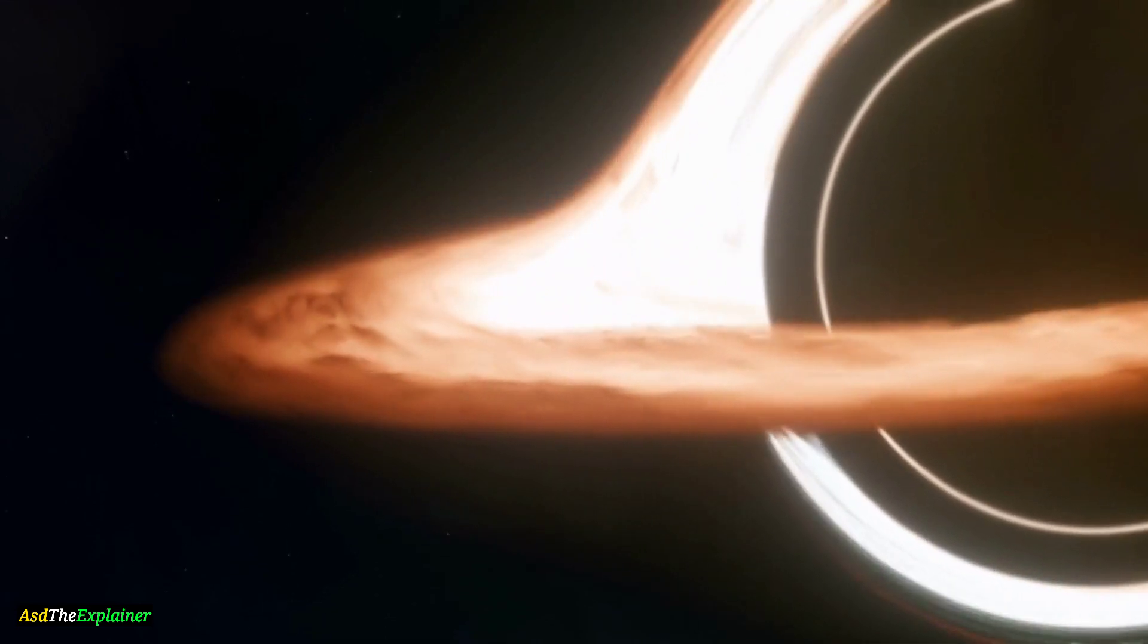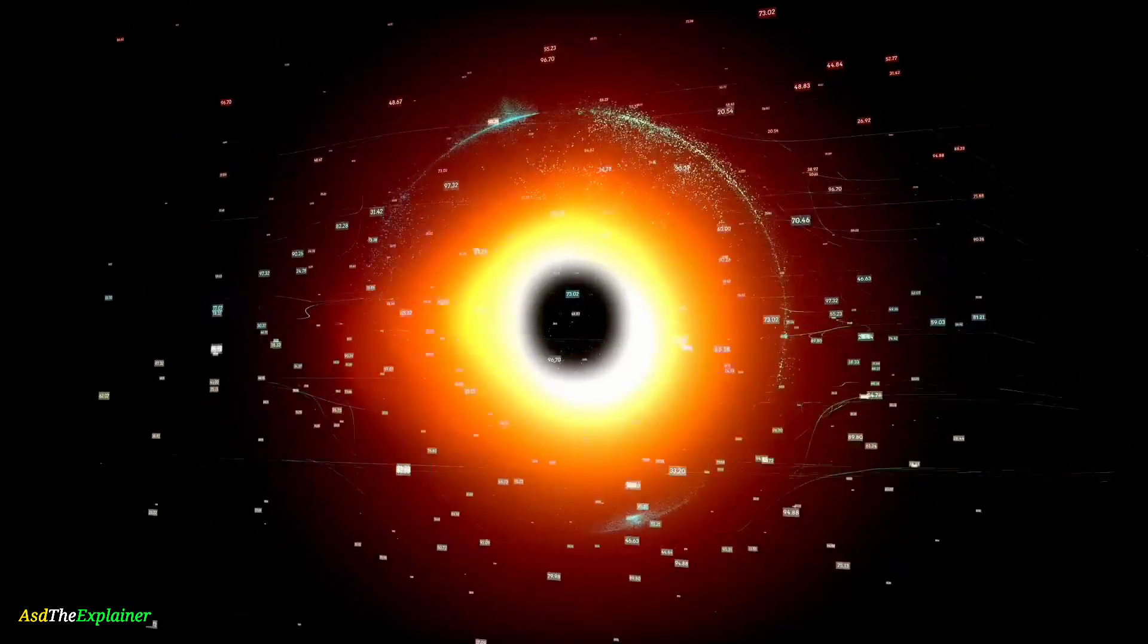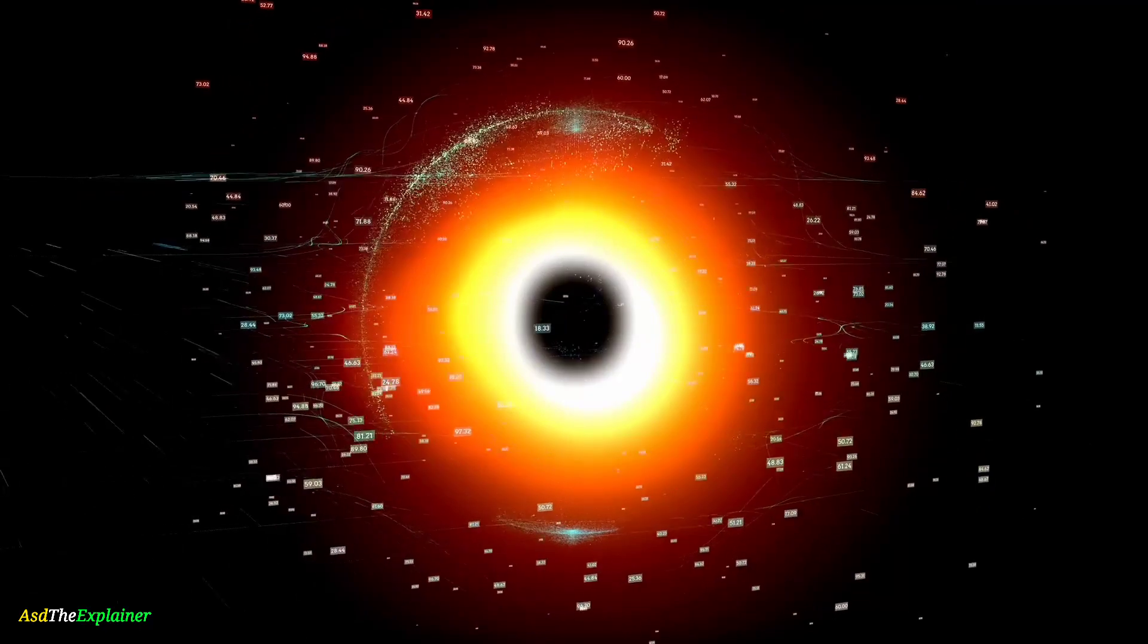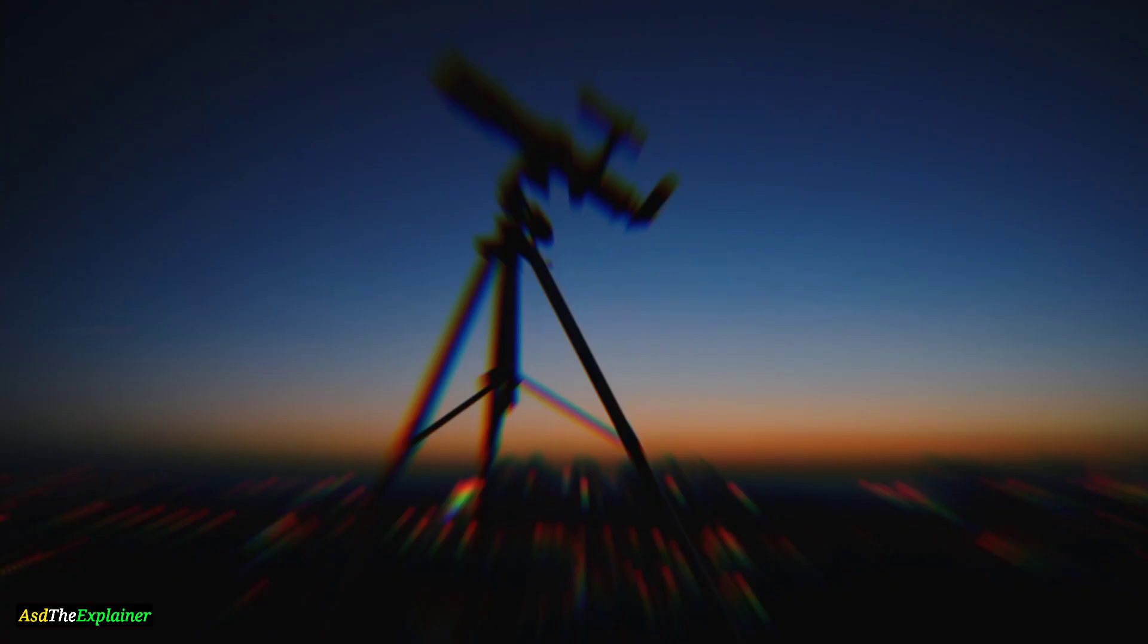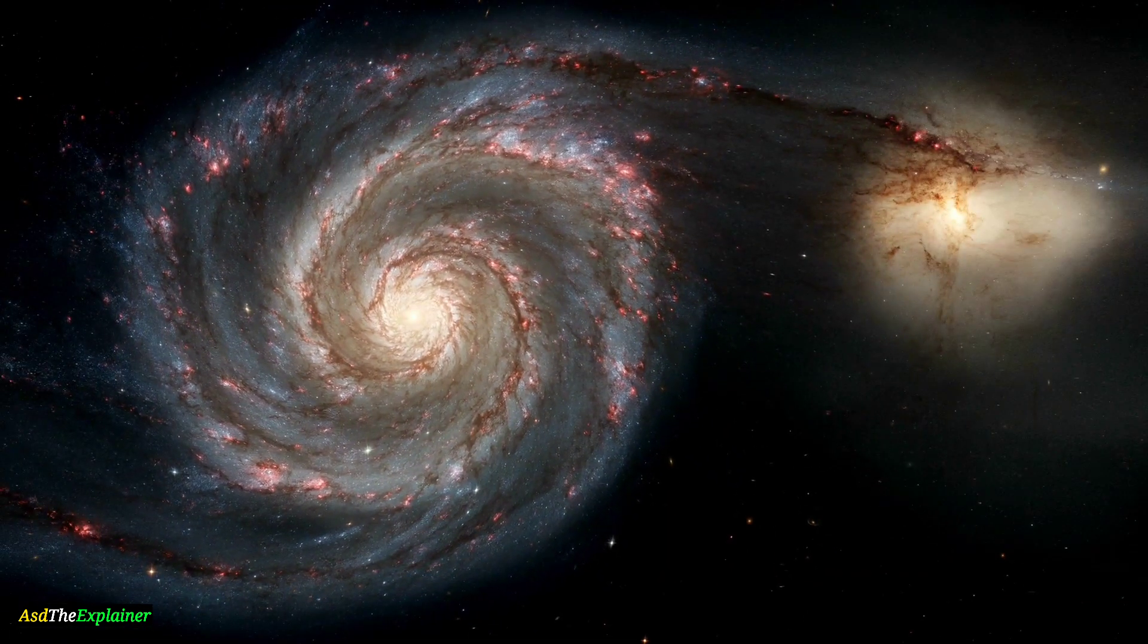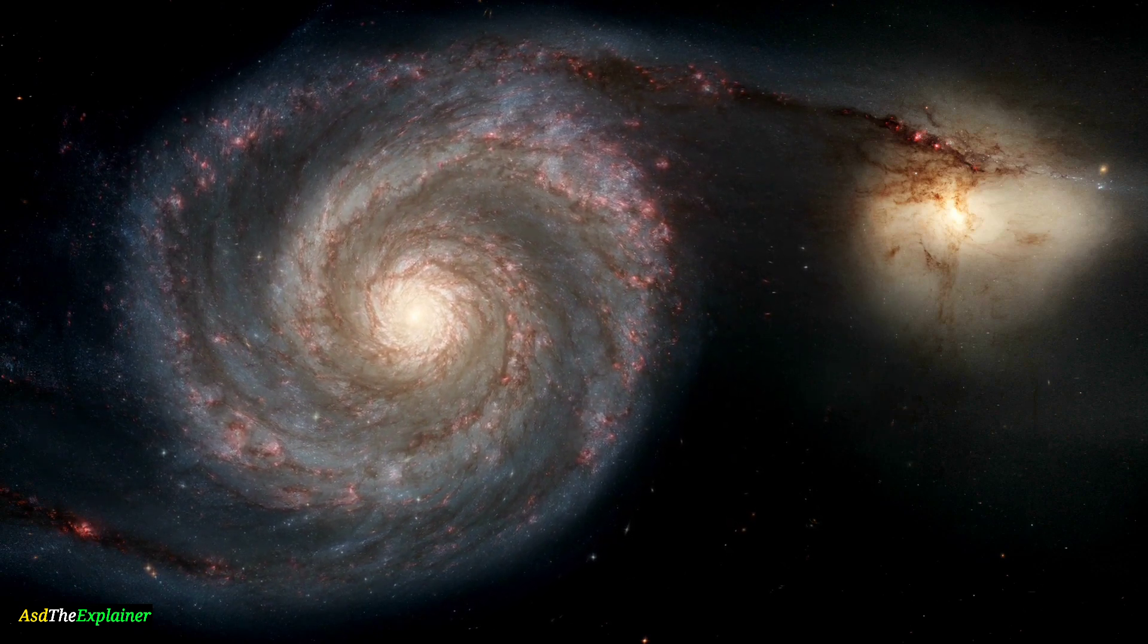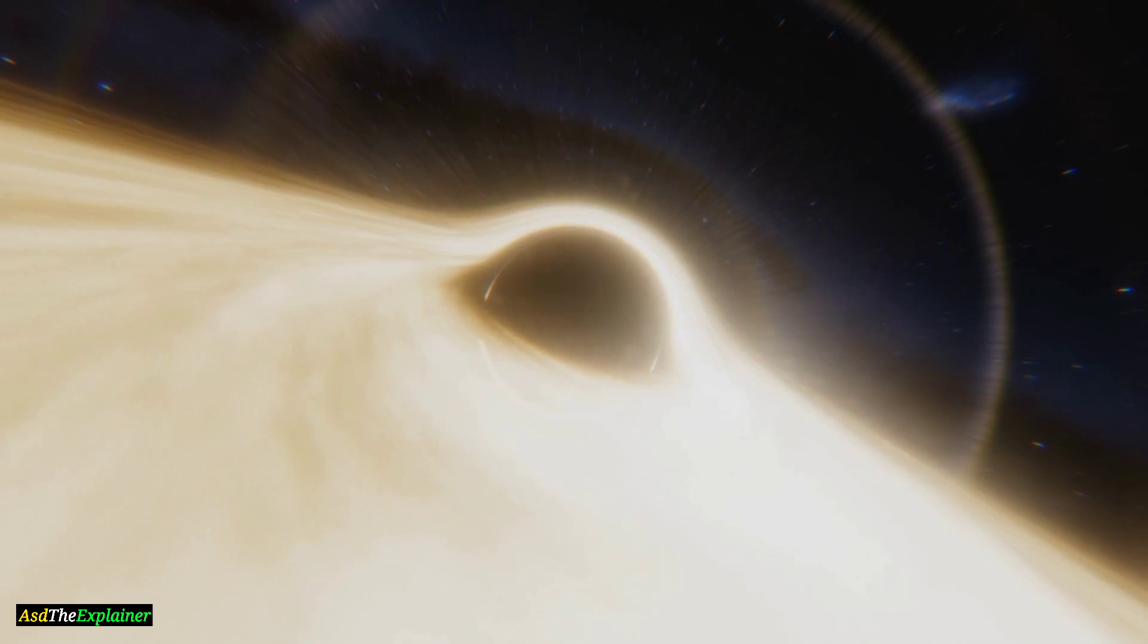Now let's talk about the groundbreaking discovery that has allowed scientists to see inside a black hole. In 2019, an international team of scientists announced that they had captured the first ever image of a black hole. Using a network of eight telescopes around the world called the Event Horizon Telescope, or EHT, the team was able to observe the supermassive black hole at the center of the Messier 87 galaxy. The EHT works by combining the signals from the telescopes to create a virtual telescope the size of the Earth.